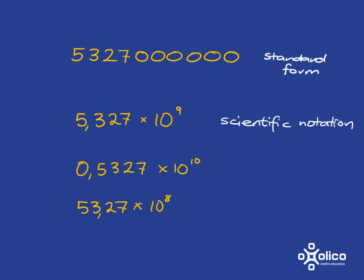Take note, for scientific notation we need to have just one digit before the comma and that digit can't be zero. So it must just be one digit before the comma and that digit can't be zero. So this is that number written in scientific notation.